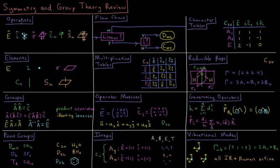These symmetry operations are associated with symmetry elements, things like the identity, a point of inversion, a plane of reflection, an axis of rotation, or an improper axis of rotation.